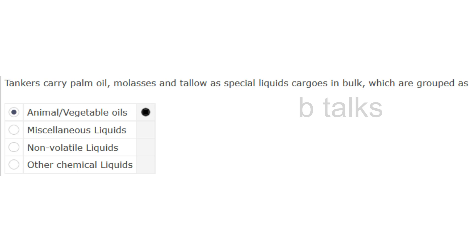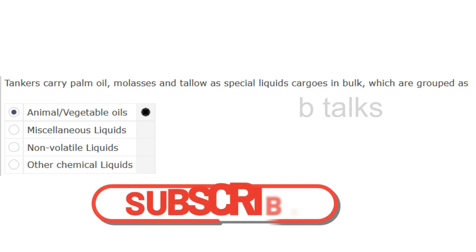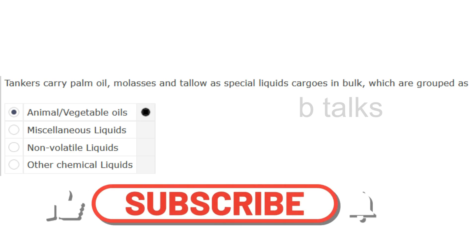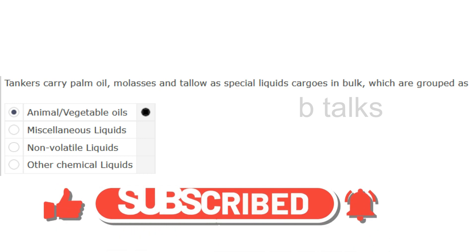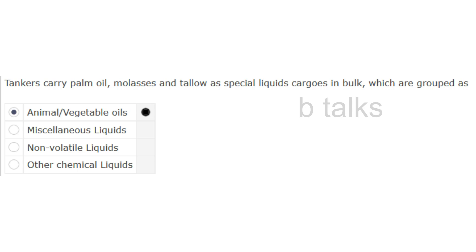Tankers carry palm oil, molasses and tallow as special liquid cargos in bulk, which are grouped as: Animal or vegetable oils, Miscellaneous liquids, Non-volatile liquids, or Other chemical liquids? Answer: Animal or vegetable oils.